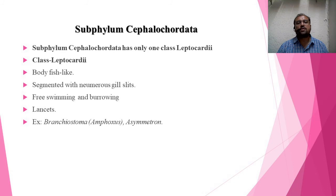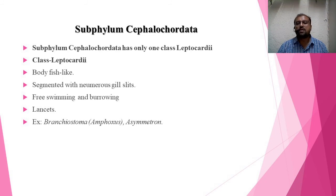Class Leptocardia includes individuals having a fish-like body, somewhat laterally compressed, with median fins present. The body is segmented with numerous gill slits. They are free-swimming and burrowing individuals, commonly called lancelets. Examples include Branchiostoma, also known as Amphioxus, and Asymmetron.